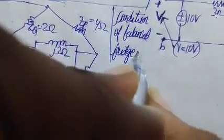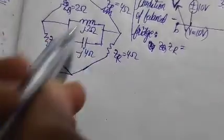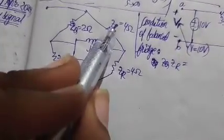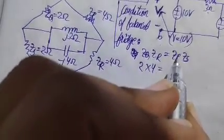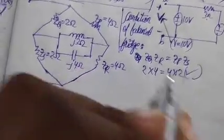To check the condition for the balanced bridge, you have to do a cross-type multiplication. ZQ is multiplied with ZR, and ZB is multiplied with ZS — cross directions. So ZQ times ZR: 2 multiplied by 4 equals 8. ZB times ZS: 4 multiplied by 2 equals 8. This condition is satisfied, so this is a balanced bridge.